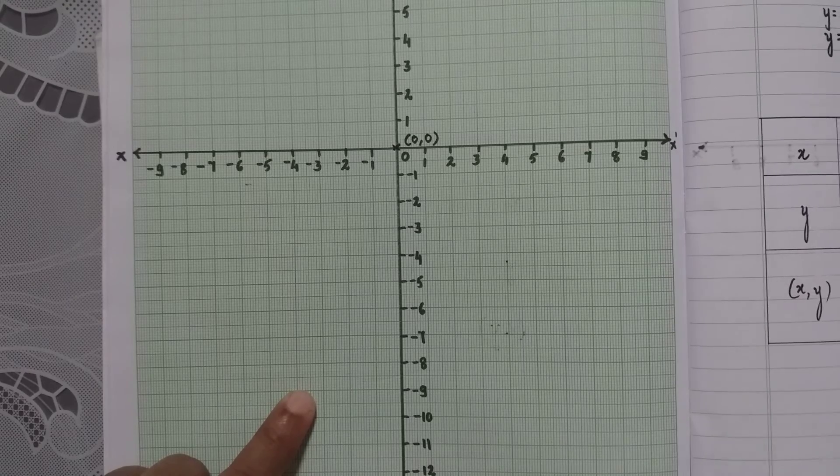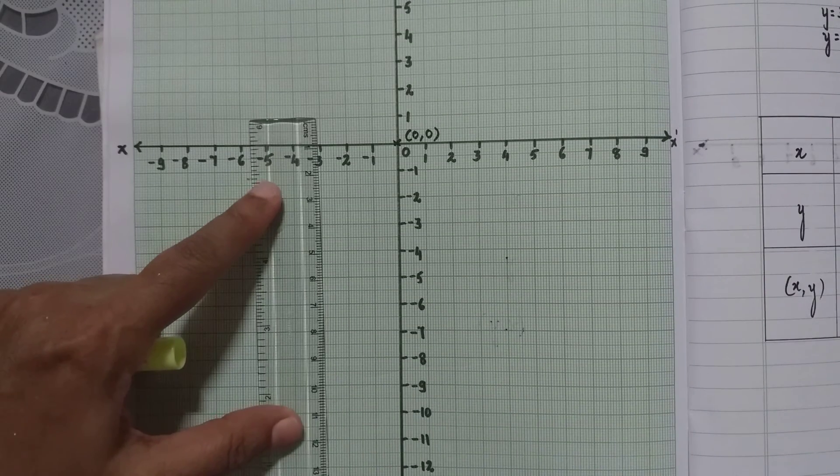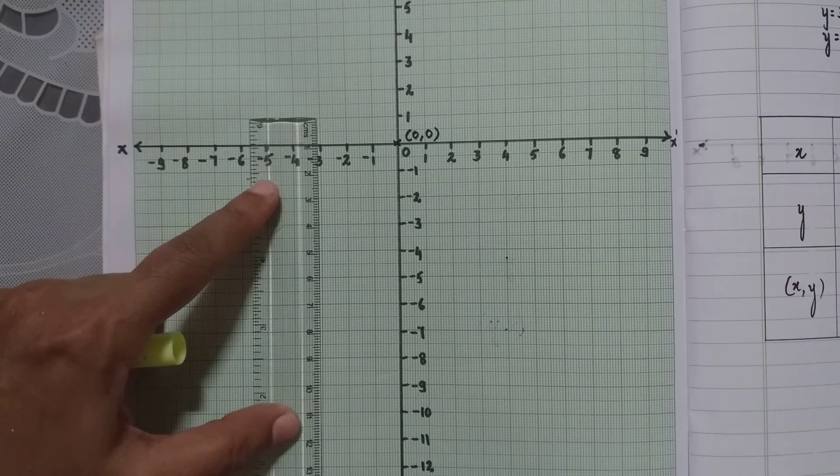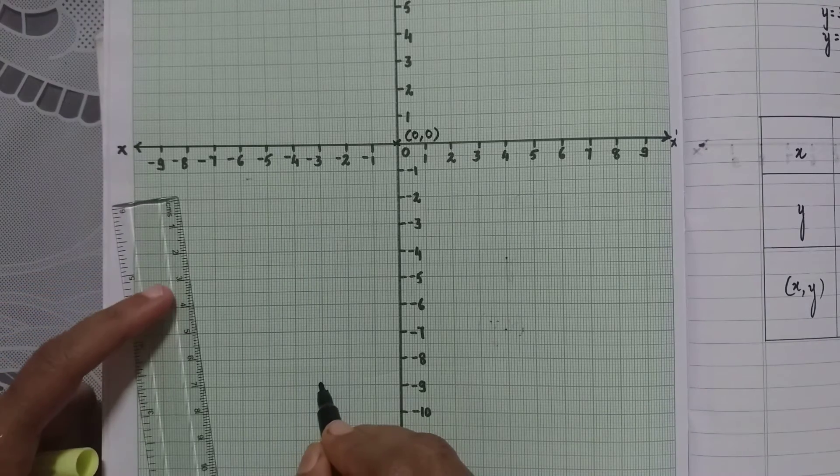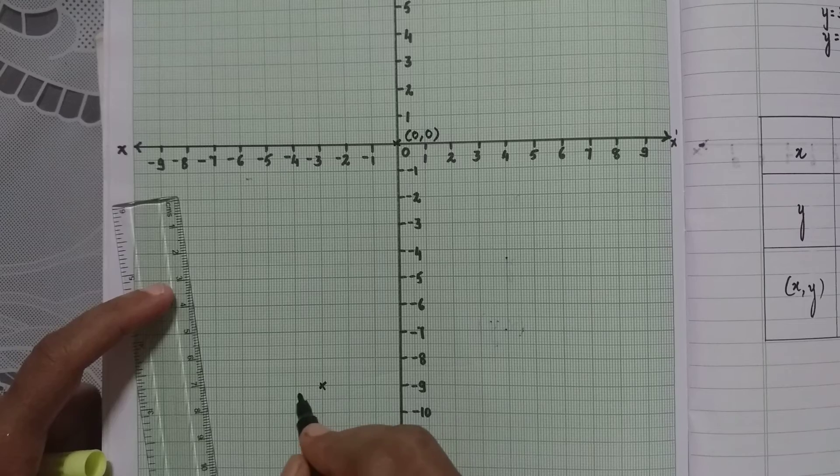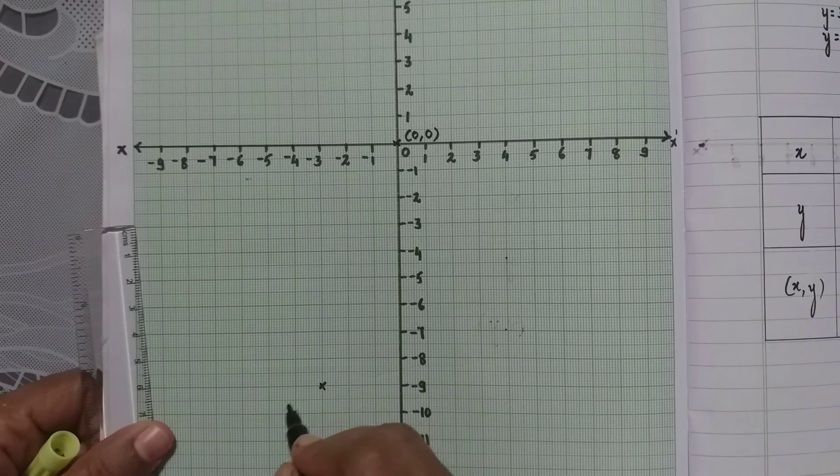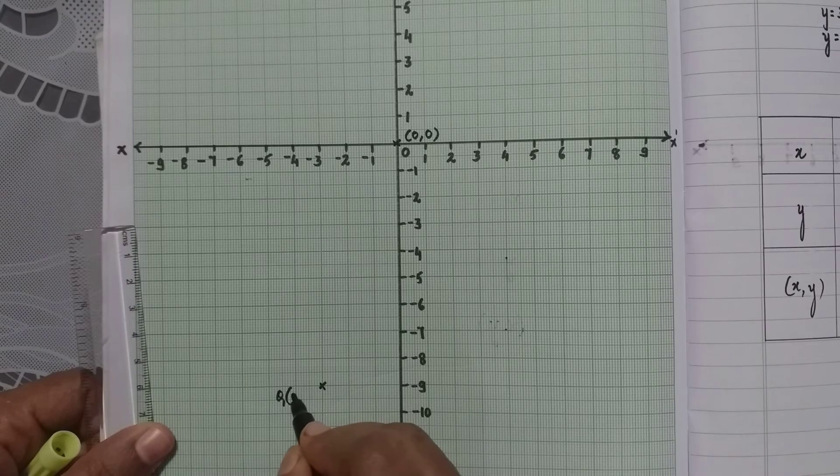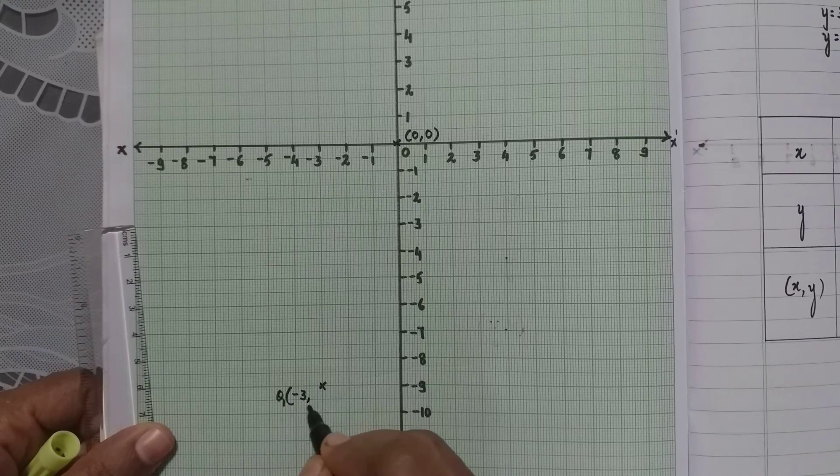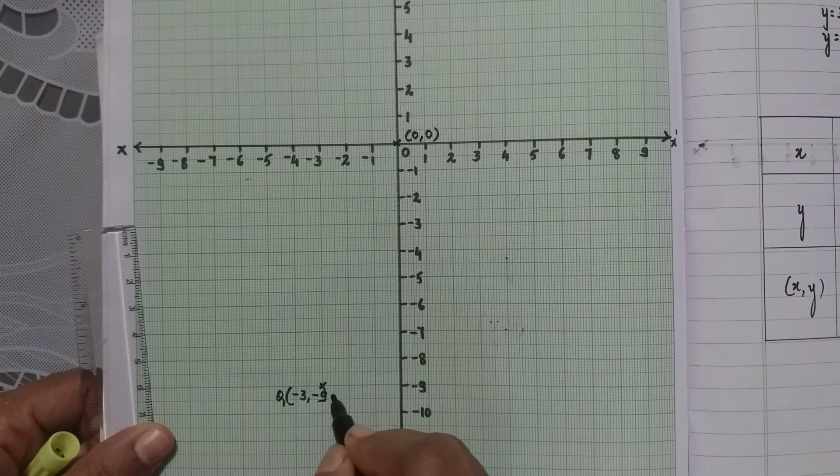So you will see here, minus 3 on the x-axis, minus 9 on the y-axis will be this point. So I can mark here Q, minus 3, minus 9.